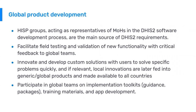Being close to the field and the user is critical when designing systems, and HISP groups support global DHIS2 product development in many aspects. They act as representatives of ministries of health in the DHIS2 software development process and represent the main source for requirements in the roadmap and prioritization process. HISP groups also play a crucial role in facilitating field testing and validation of new functionality, with critical feedback loops back to global teams. They also innovate and develop custom solutions with users to solve specific problems quickly, and when relevant, these local innovations are fed into generic global products available to all countries. HISP groups also participate in developing implementation toolkits, implementation guidance, metadata packages, training materials, and app development.